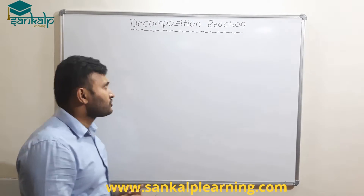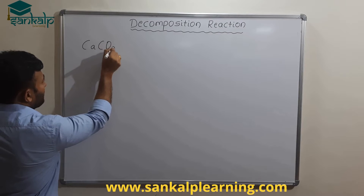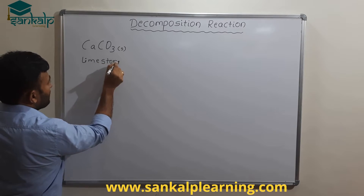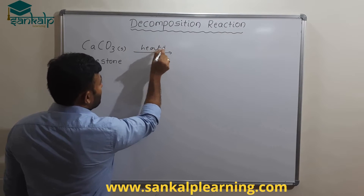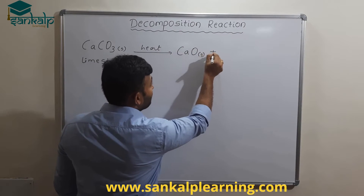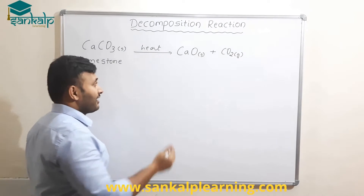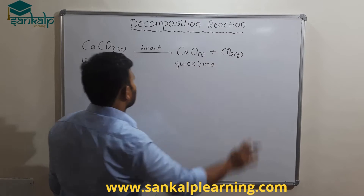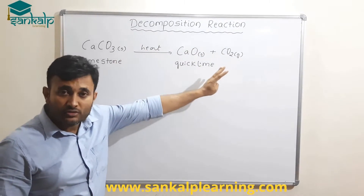Let's take a few examples. You know about limestone, right? Calcium carbonate, CaCO3. When this limestone is heated, you get calcium oxide and carbon dioxide. Calcium oxide is also called quicklime. So this is the decomposition reaction — one reactant gives two different products.